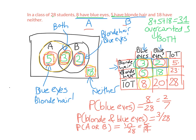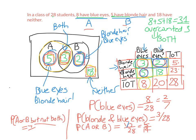When we just say 'or,' we include both. But if I said what's the probability of A or B but NOT both, I'm interested in people who have blue eyes or blonde hair but not both. That would be just those 5 in blue-eyes-only and those 2 in blonde-hair-only. So it would be 7 out of 28, which is the same as 1 over 4. Please pause and copy down these examples if you need.